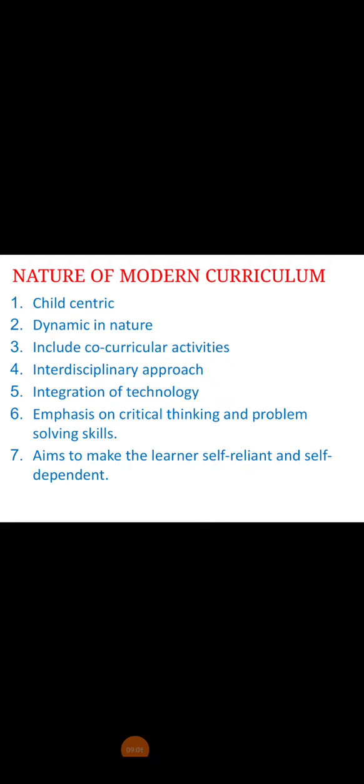Now we will discuss the modern characteristics of curriculum. Modern curriculum is child-centric — unlike traditional curriculum, it takes into consideration the needs, interests, likes, dislikes and abilities of a child while framing the curriculum. Modern curriculum is always dynamic in nature and changes according to the needs and demands of society and students. It encompasses the total experience a child receives, including different co-curricular activities apart from classroom teaching and learning. Modern curriculum is also interdisciplinary in approach, as it correlates different subjects, which is of great benefit for the students.